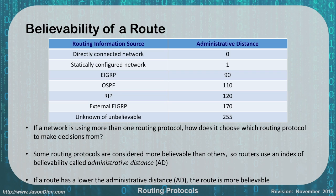One metric we look at is the believability of a route, measured by administrative distance. If a route is directly connected to a router, it trusts it implicitly and assigns it an administrative distance of zero. If you statically configure a route as an administrator, it gets assigned a distance of one — the next highest believability. The lower the number, the more believable it is. So a directly connected route is trusted over a statically configured one, but a static route is trusted over everything else except a directly connected route.